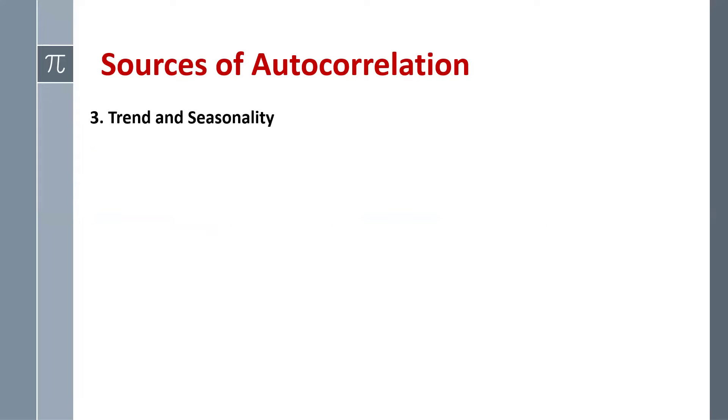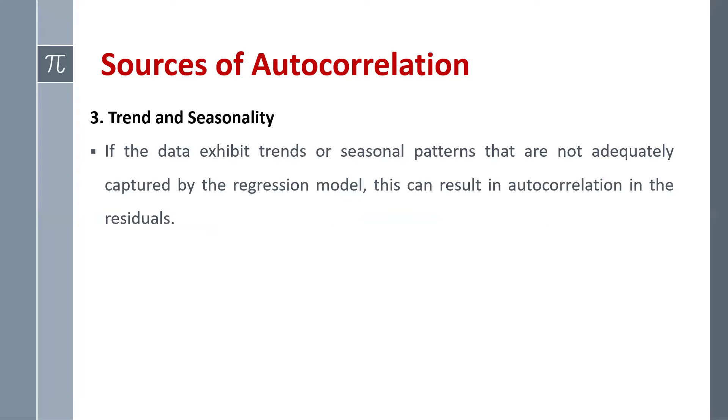Third is trend and seasonality. If the data exhibit trends or seasonal patterns which are not adequately captured by the regression model, if our variables follow any trends or seasonal patterns, then we can have autocorrelation problem.